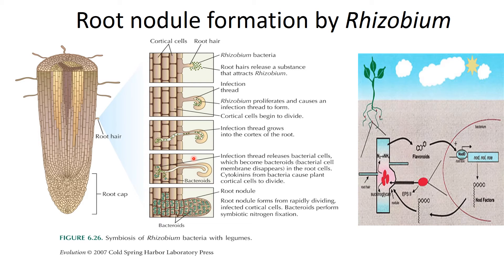The infection thread releases the bacteria into different cells, whereupon the bacterial cell membrane disappears. Cytokines from the bacteria cause the plant's cortical cells to divide. As the bacteria start multiplying inside the cells, they also influence peripheral cells to divide. As seen in the final figure, the bacteria have divided in large numbers and spread into different cortical cells, promoting multiplication of cortical cells. As bacteria grow and divide, the root nodule size also increases, forming from rapidly dividing infected cortical cells.